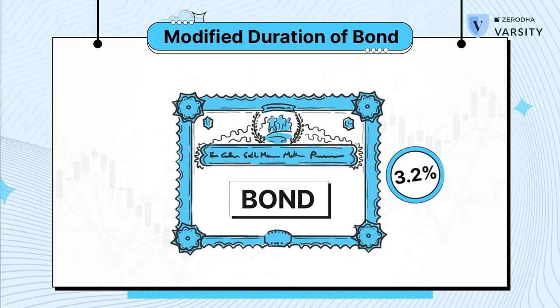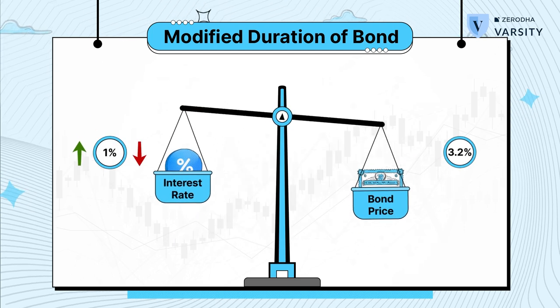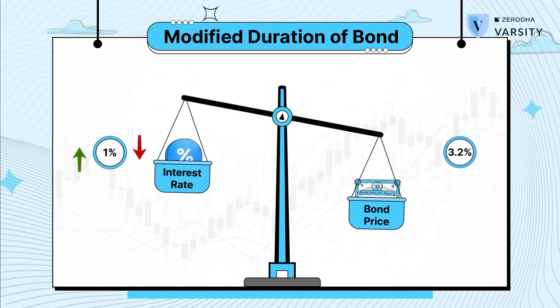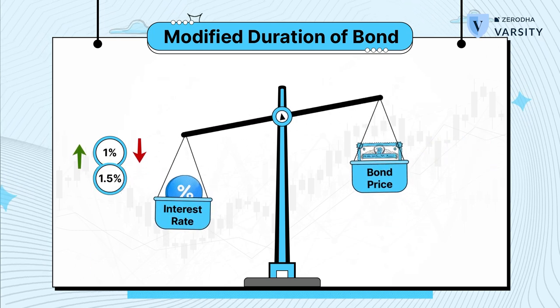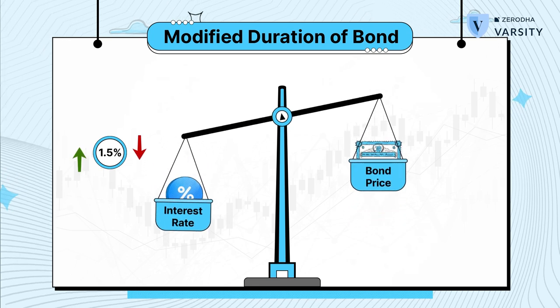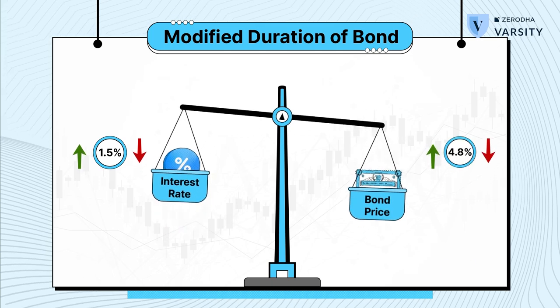Assume that the bond's modified duration is 3.2. In this case, a 1% increase or decrease in the interest rate will increase or decrease the bond's price by 3.2%. Likewise, a 1.5% increase or decrease in interest rate will increase or decrease the bond price by 4.8%. Generally, higher the duration of the bond, higher is the sensitivity to change in interest rates. By this measure, a change of 1% in the interest rate has a far greater impact on the bond price of a long duration fund compared to a short duration fund.